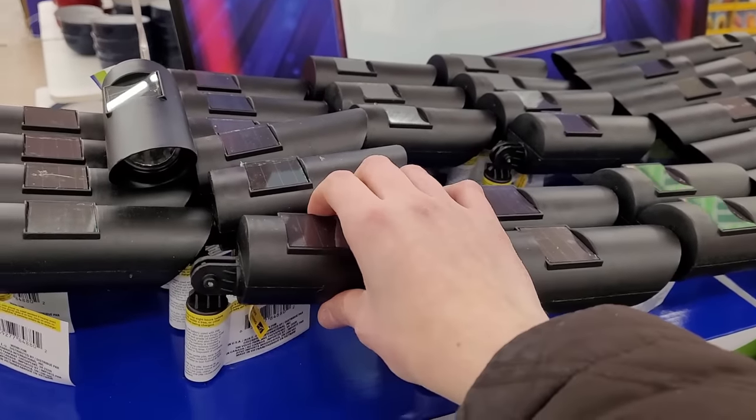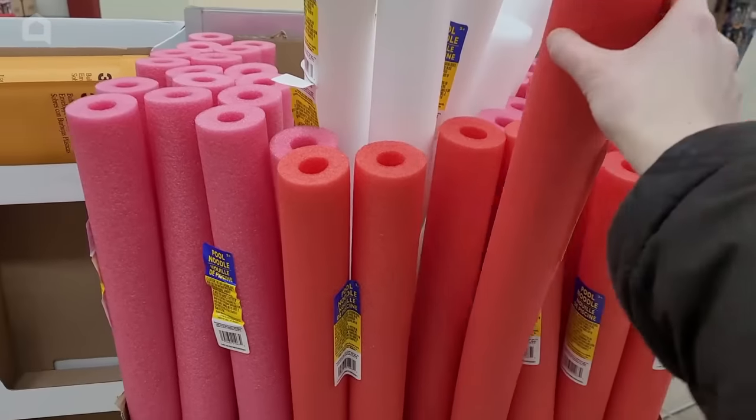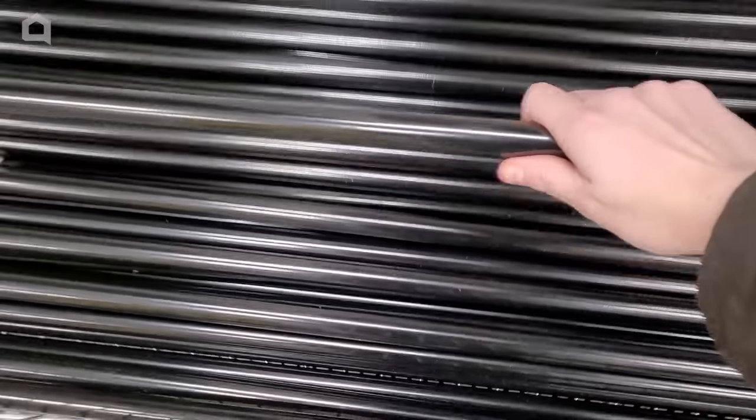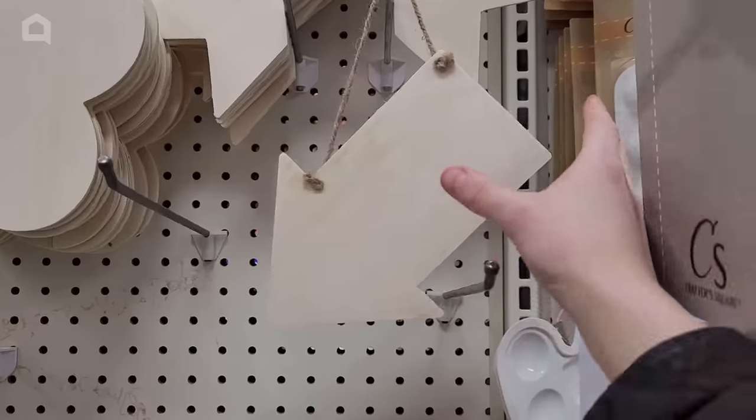Go to your local dollar store and pick up a solar light, pool noodle, broom handle, and two wooden signs.